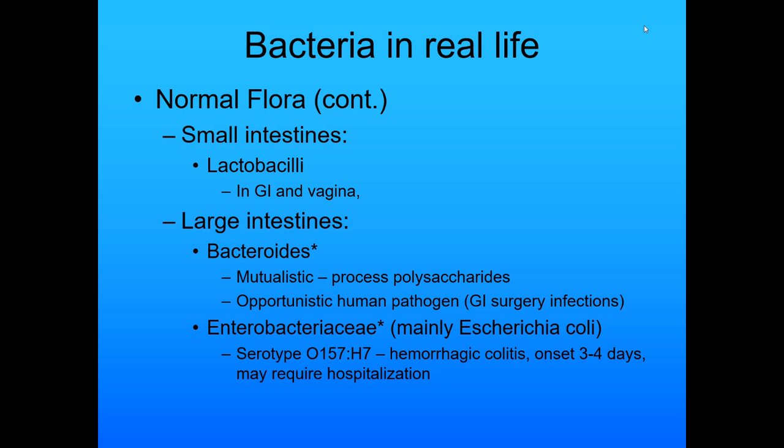Then there are the Enterobacteriaceae, mainly Escherichia coli. E. coli is a magical little thing — we use it in research all the time; it makes so many things for us. But there are some serotypes, like O157:H7, which causes hemorrhagic colitis and may require hospitalization.